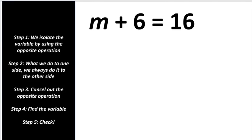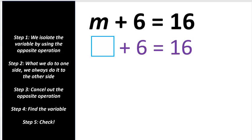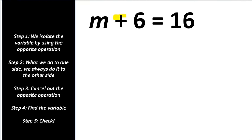Our first equation is m plus 6 equals 16. This is the same as: something plus 6 equals 16, and that something is m — m is the variable. If you need to quickly review parts of equations, I'm adding a link at the top of my screen. Now we need to isolate the variable by using the opposite operation.